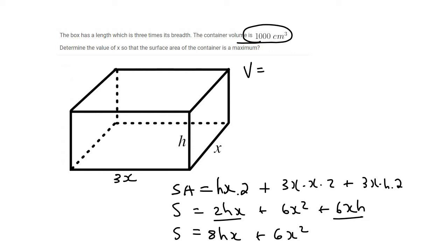So we know that volume, for a shape like this, would be length times breadth times height, which would be 3x times x times h, which would be 3x squared times h. Now they've told us that the volume is 1,000. So we could say 1,000 is equal to 3x squared times h.